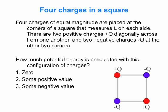When asked previously, many people vote for zero — since there's as much positive charge as negative charge, that seems reasonable. But let's work it out by actually calculating the energy to see whether it's positive or negative, using both calculation and conceptual analysis.